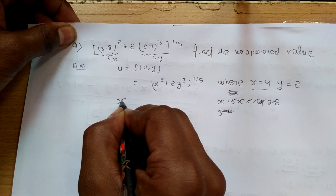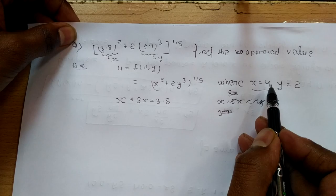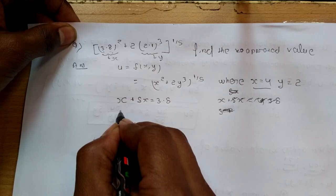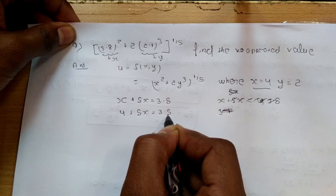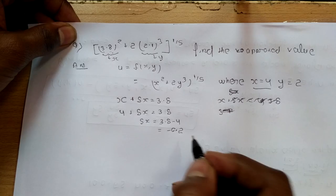इस पूरे पार्ट को मैंने लिखा x + Δx = 3.8, और हमने x की value 4 consider कर रखी है। Therefore, 4 + Δx = 3.8, therefore Δx = 3.8 − 4 = −0.2.